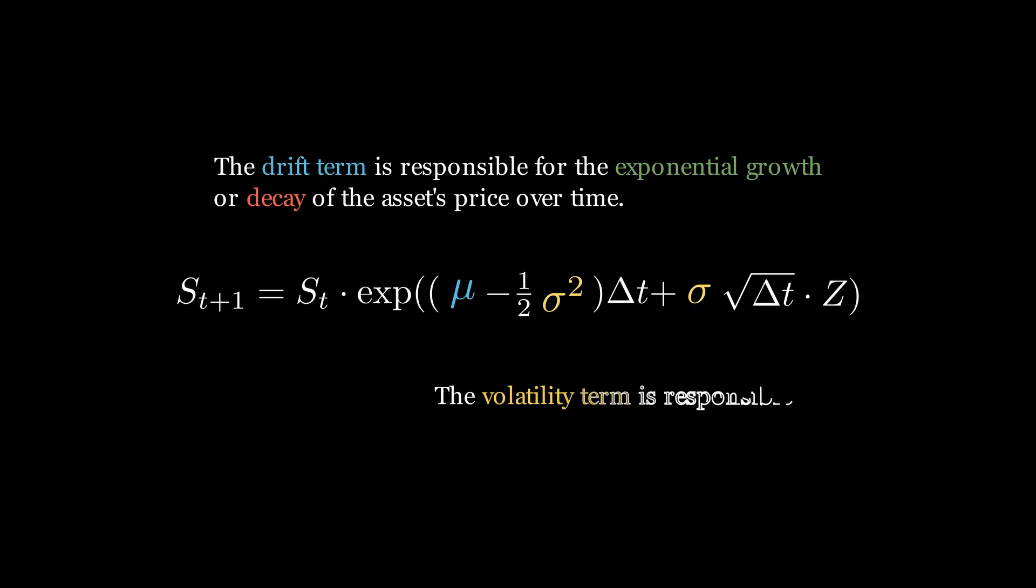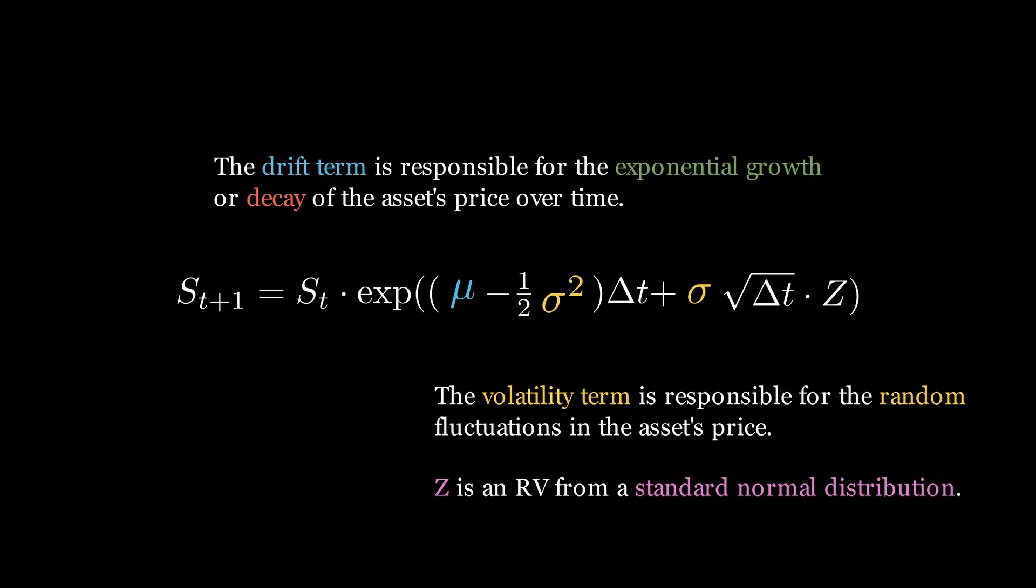The volatility term is responsible for the random fluctuations in the asset's price. This component causes the jagged movements we see on price charts market-wide. This component generates noise by sampling from Z, which is an RV from a standard normal distribution, meaning it has mean 0 and variance 1.